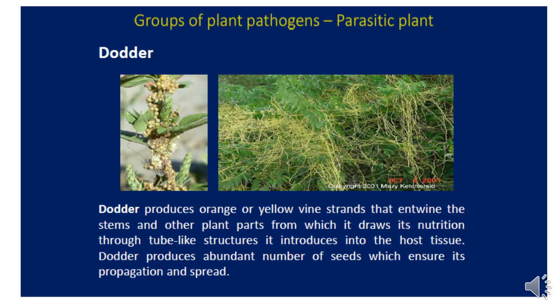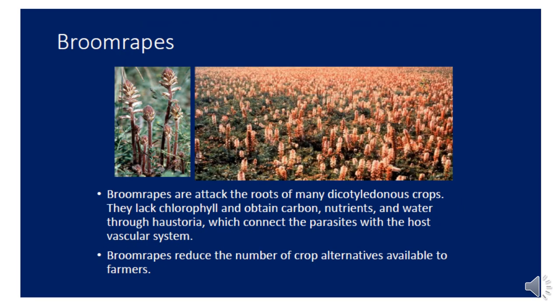The second parasitic plant is called broomrape. Broomrape attacks the root system of dicotyledon crops — for example, faba bean or common bean — and absorbs water and nutrients from the root system through haustoria, as mentioned before with dodder. Broomrape also reproduces by producing seeds, and these seeds spread to infect other plants in different areas in the next seasons.